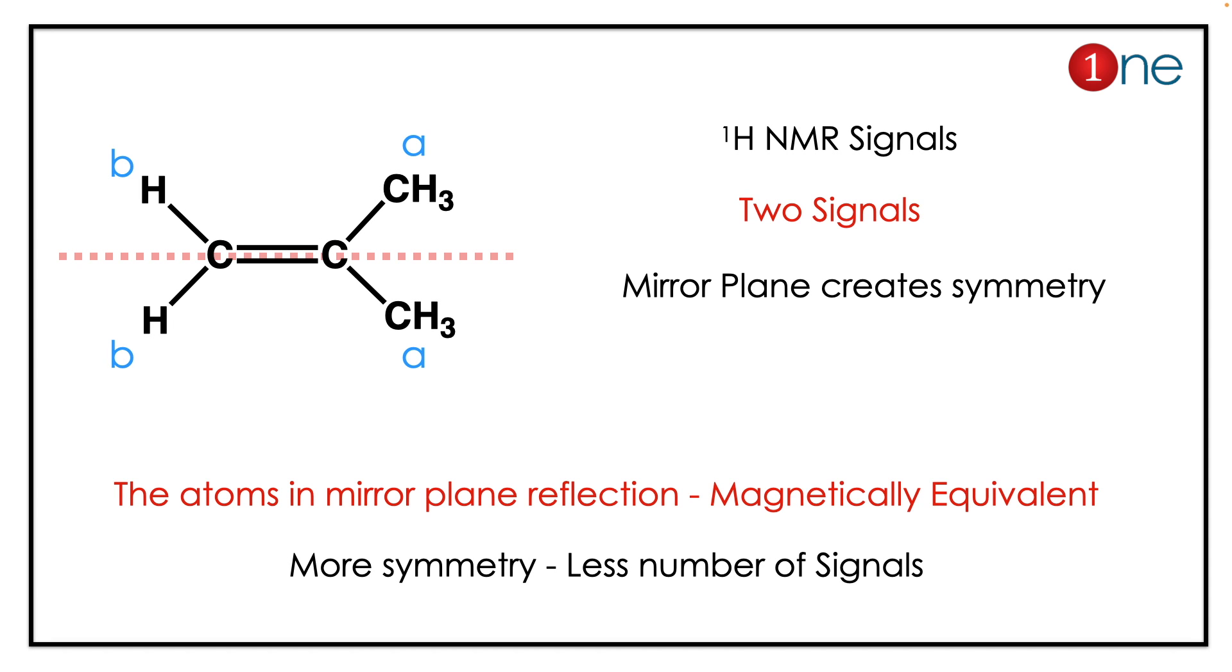Before finding the NMR signal, you have to know how many mirror planes are inside, or is there any symmetry present in the molecule or not. Here, a plane of symmetry is present in the molecule, or you can say C2 symmetry is present in the molecule.